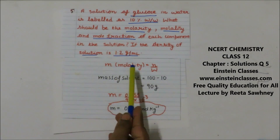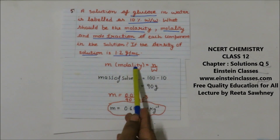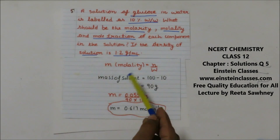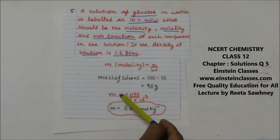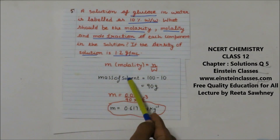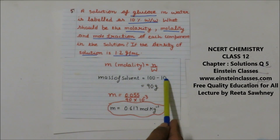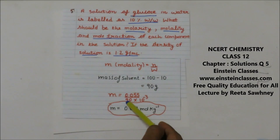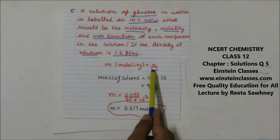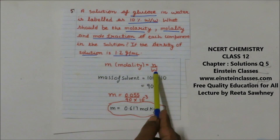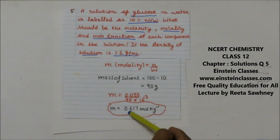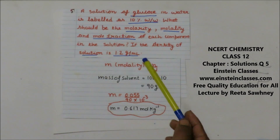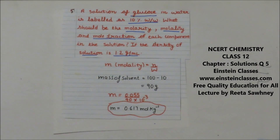Now we find the molality of the solution. Molality = moles of solute divided by mass of solvent in kilograms. Moles of solute (glucose) = 0.055. Mass of solvent = 90 gram, which in kilograms is 90 × 10⁻³ kg. So molality = 0.055 / 0.090 = 0.617 mol per kg.